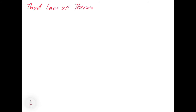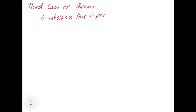The third law of thermodynamics basically sets a limit on entropy. The law itself says that we have to define what zero entropy is. We'll never see this in the universe, but we can set a lower limit: a substance that is perfectly crystalline at zero kelvin will have zero entropy.